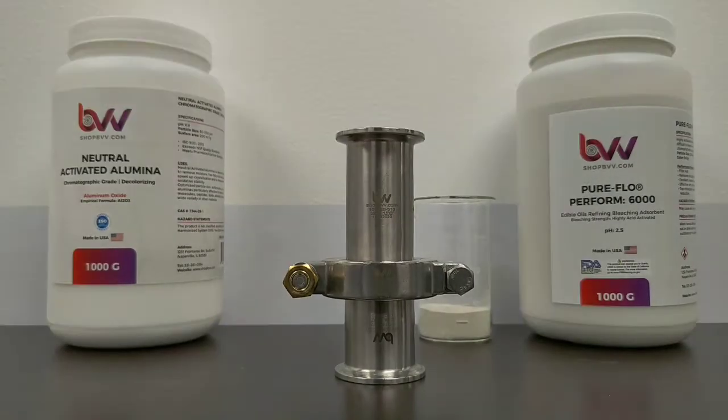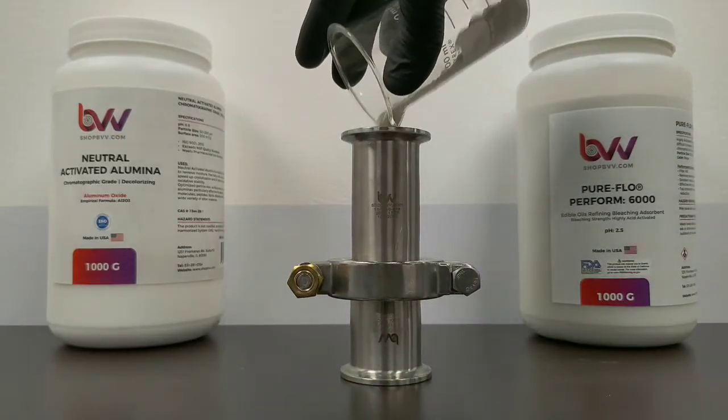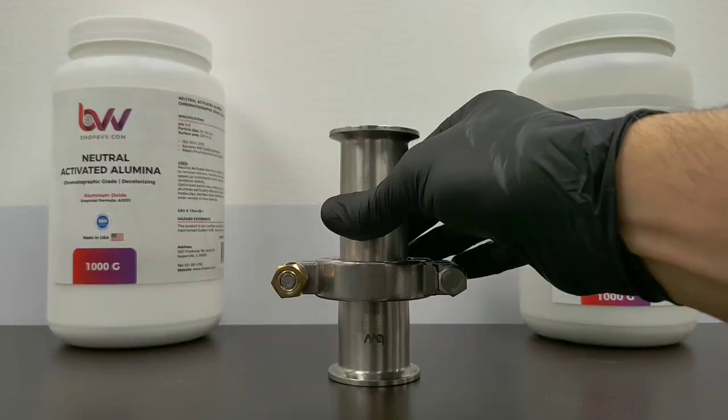Add your neutral activated alumina and agitate to create an even layer. Add your bentonite clay and agitate again to create an even layer.